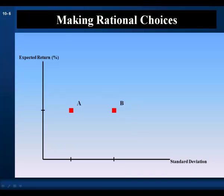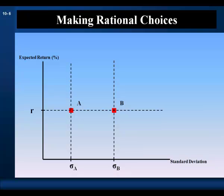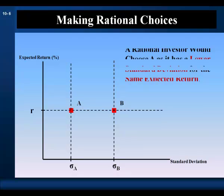Once again, we have two securities, A and B, and we have to make a choice. Both securities have the same expected return; however, security A has a lower risk. A rational investor would choose A because it has a lower standard deviation for the same expected return.